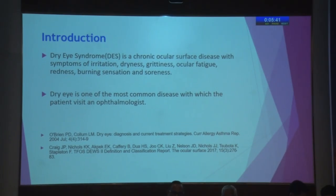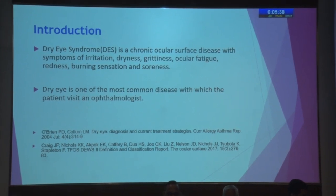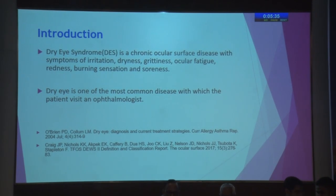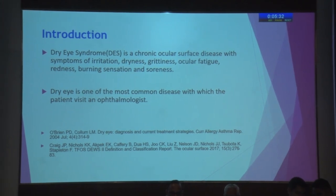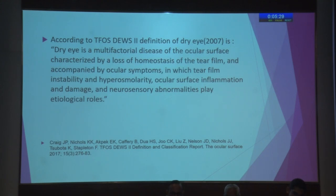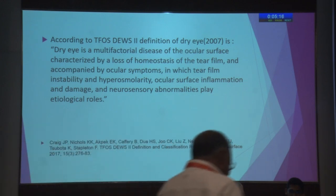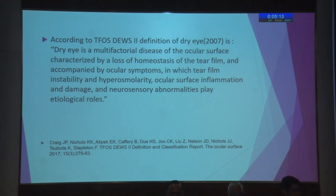To introduce the topic, dry eye syndrome is a chronic ocular surface disease with symptoms of irritation, dryness, grittiness, ocular fatigue, redness, burning sensation, and soreness. Dry eye is one of the most common diseases for which patients visit an ophthalmologist. According to TFOS — the Tear Film and Ocular Surface Society — dry eye is a multifactorial disease of the ocular surface categorized by a loss of homeostasis of the tear film, accompanied by ocular symptoms in which tear film instability and hyperosmolarity, ocular surface inflammation and damage, and neurosensory abnormalities play an etiological role.